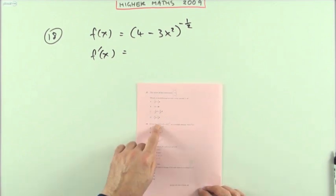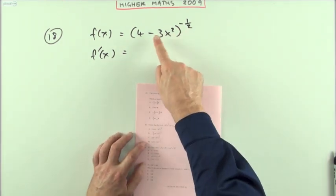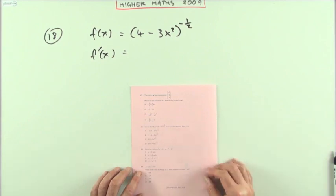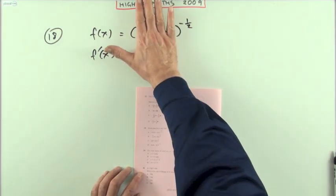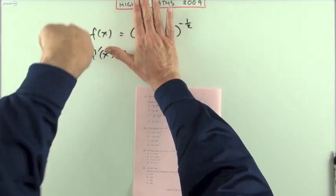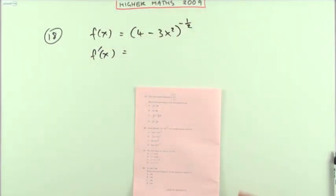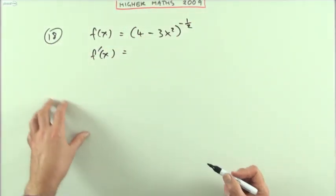Number 18, given this function which is a function of a function, so you'll be thinking chain rule but you should really think function of a function, there's an inner function and there's something outside happening to it. Find the derivative, well what have we got?